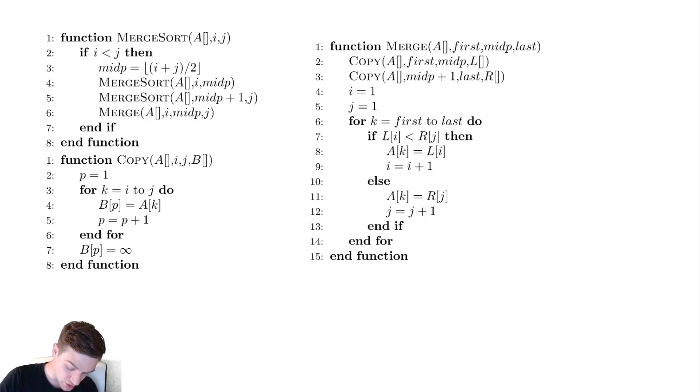So the code for merge sort is actually very short. It's only eight lines there. We find the midpoint. We then sort the two halves and then merge them together. Most of the work of merge sort is actually done in the merging of those two arrays together.